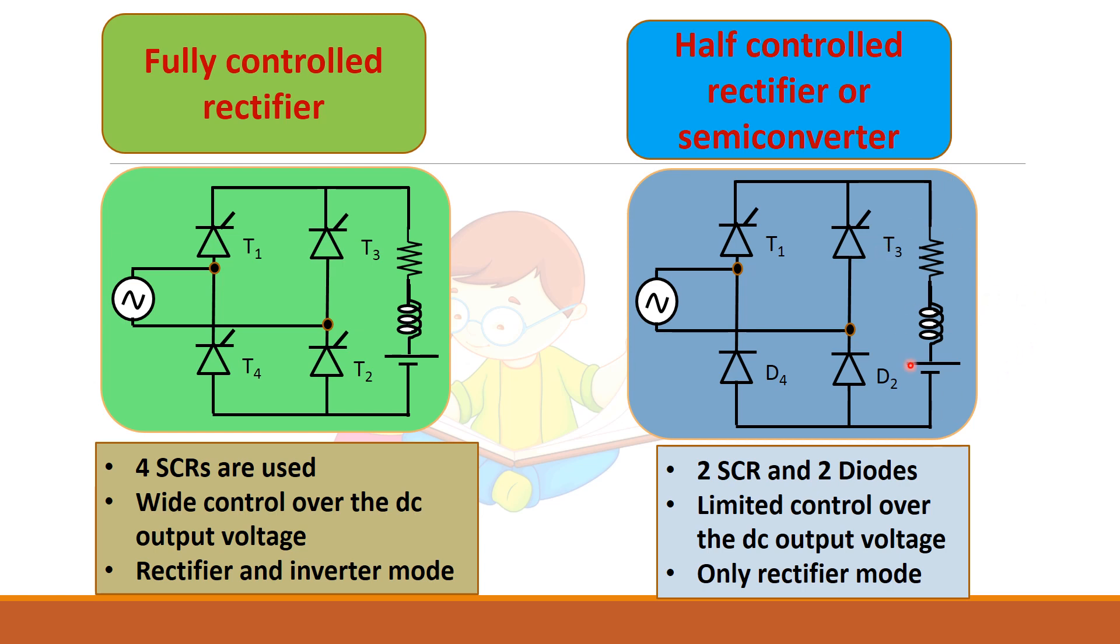Why? Because the cost of thyristor and its gate circuit will be costlier. So when you use diode your circuit will be cheaper because in some applications you may need only rectifier mode. In that case going for a fully controlled rectifier will be costly option. So in such cases where you need only rectifier mode of operation you can go for a semi converter instead of a fully controlled rectifier.